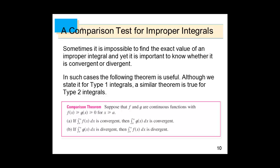This makes sense because f is bigger than g, so if the integral of the bigger function (f) is convergent — meaning its area is finite — then the smaller function (g) must also have finite area. And if the integral of the smaller function (g) is divergent — infinite area — then f, being bigger, must also diverge.